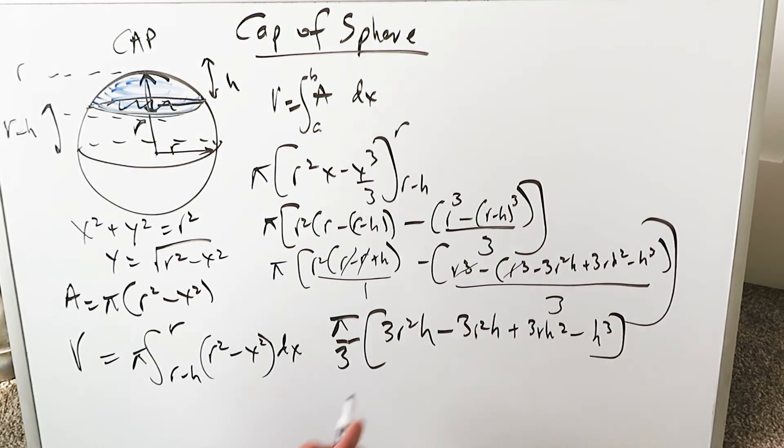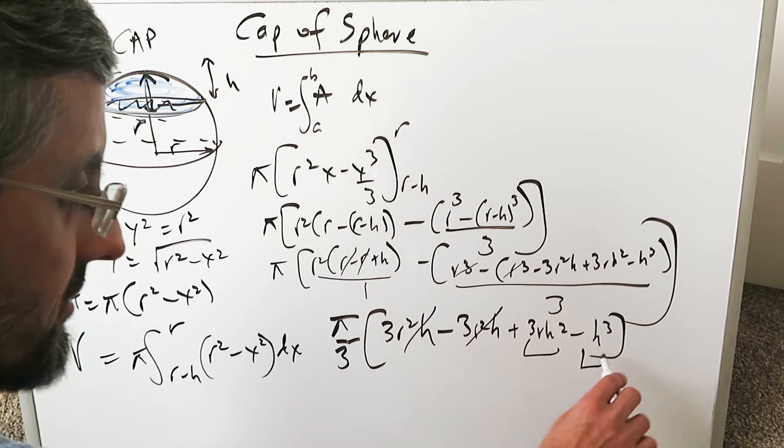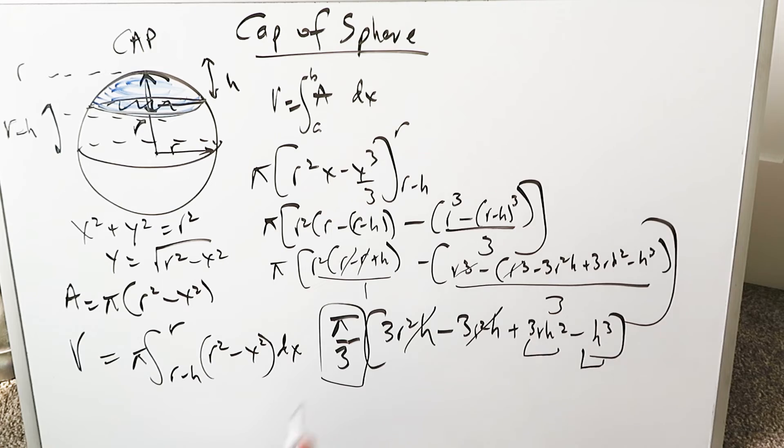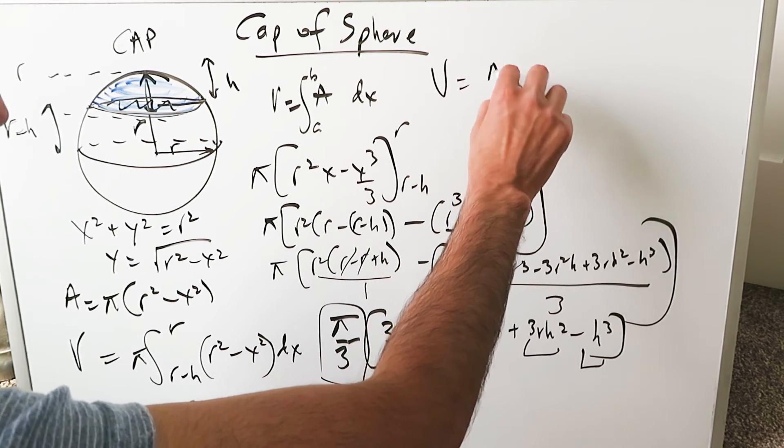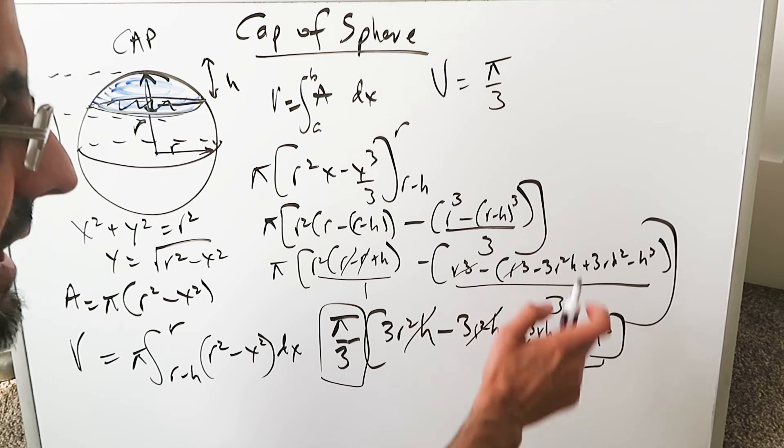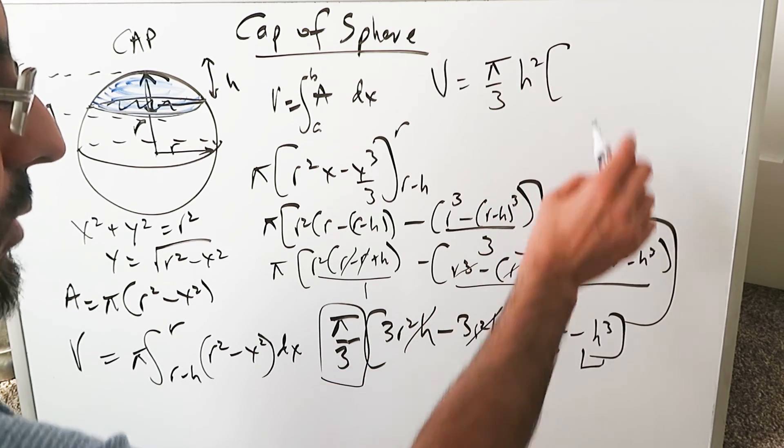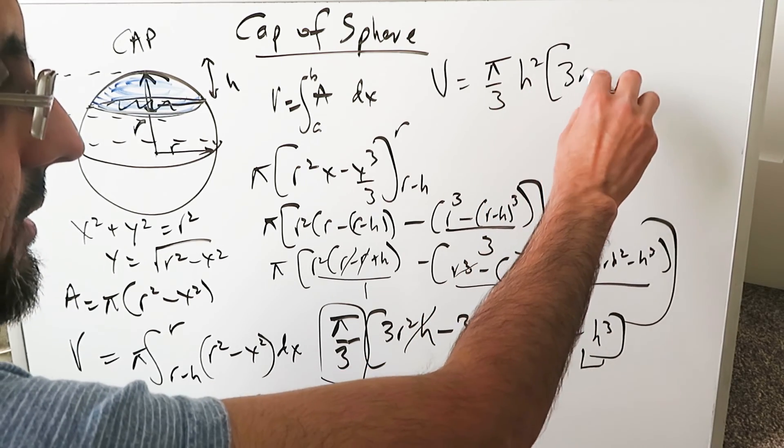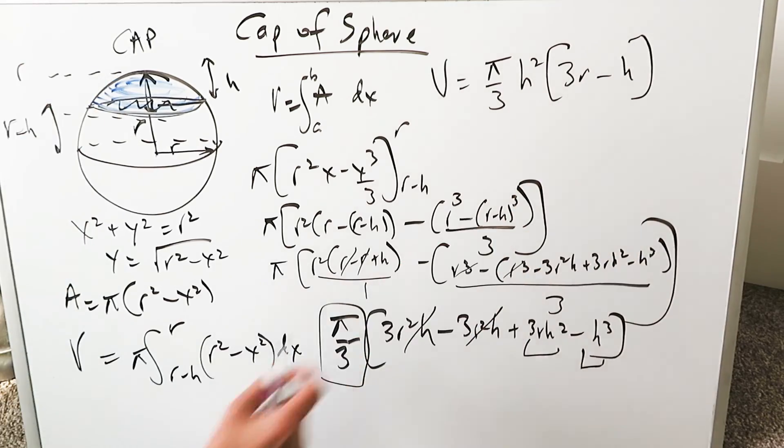What cancels out from here? 3 R squared H minus 3 R squared H. The only thing which remains are these two items and the coefficient here. The volume of that would be pi over 3. You have 3 R H squared minus H cubed. Isolate an H squared. And what remains? A 3 R minus H. That would be the volume of this cap and our question has been solved.